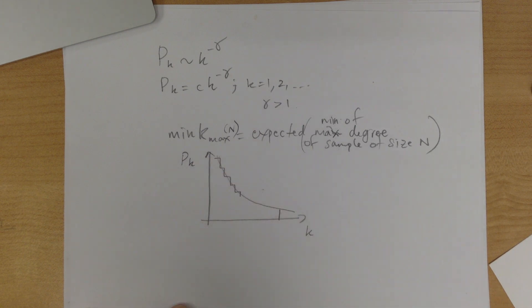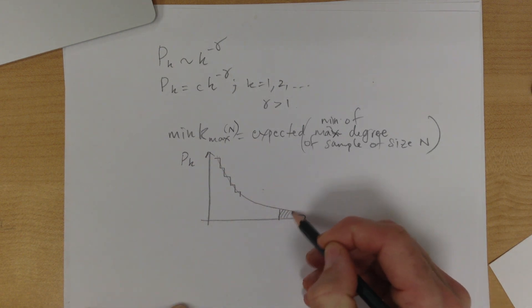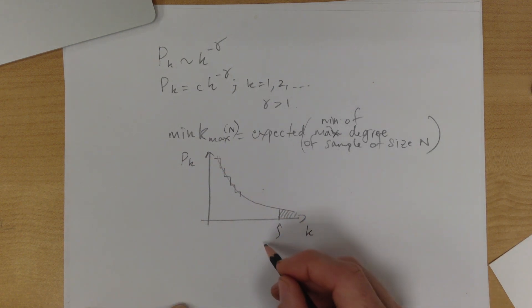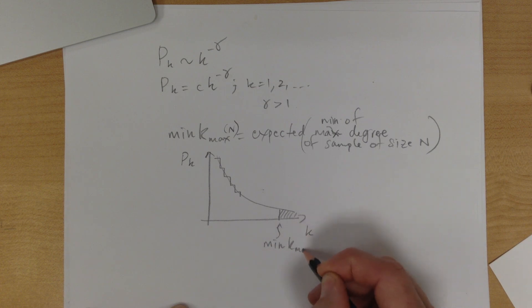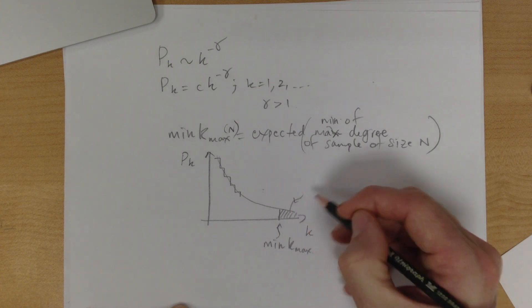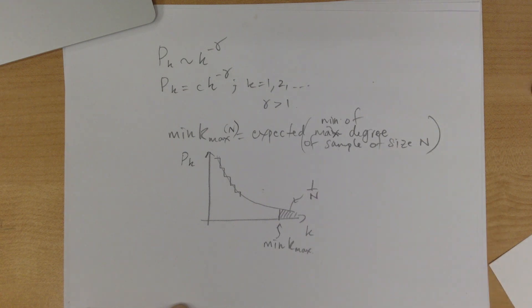So what we want to do is say P of K, we'll say this point here is min of K max, providing there's a one over N probability that we get at least that value if we sample N times.